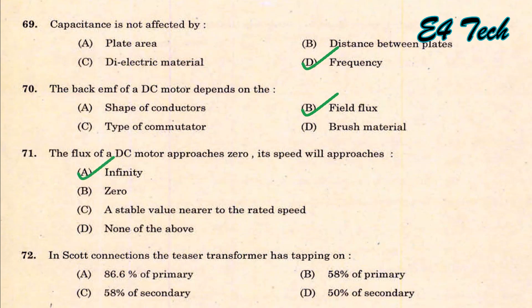In Scott connection, the teaser transformer has a tapping at 86.6% of the primary. That is option A.